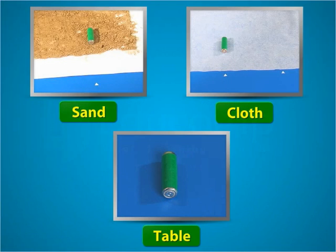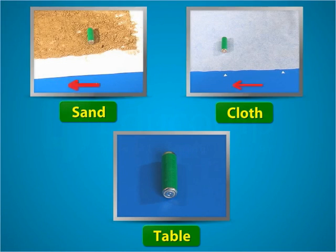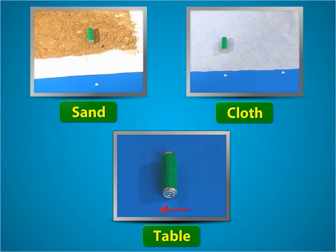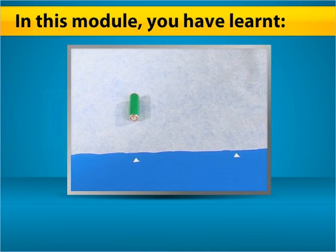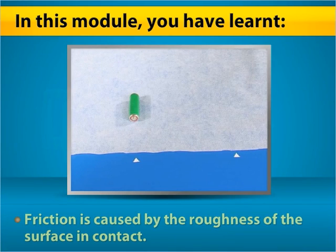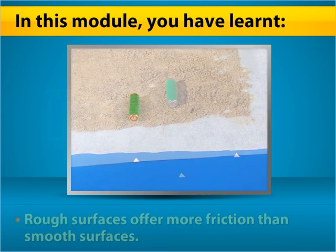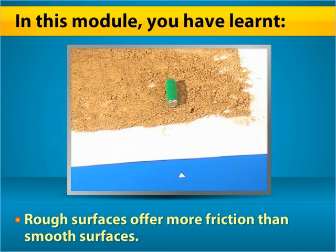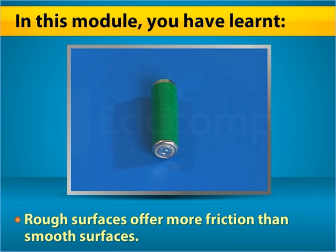Through this activity, it can be inferred that rough surfaces offer more friction than smooth surfaces. In this module, you have learnt that friction is caused by the roughness of the surface in contact, and rough surfaces offer more friction than smooth surfaces.